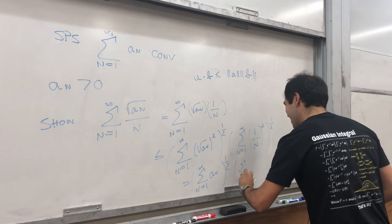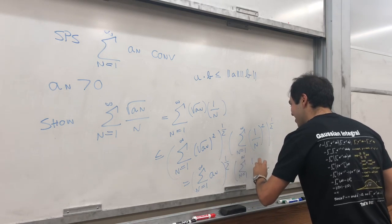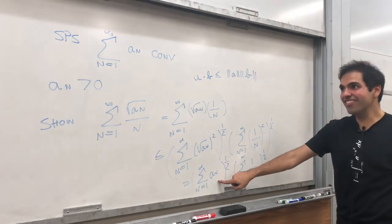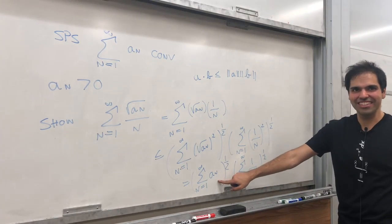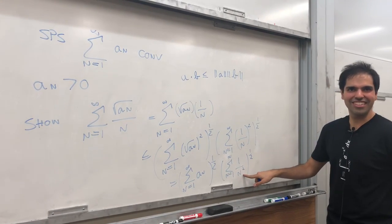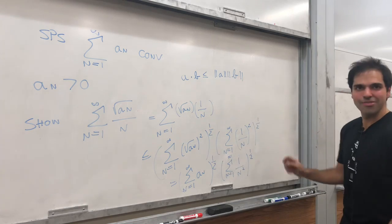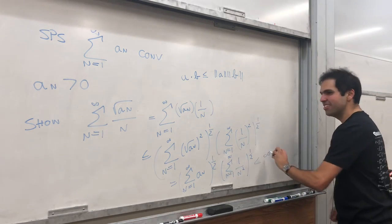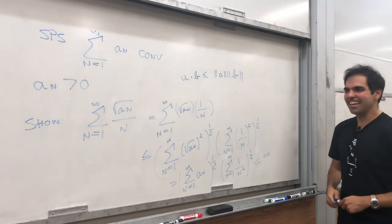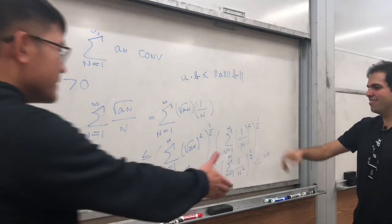So this is less or equal to the sum from 1 to infinity of square root of A_n squared, times sum from 1 to infinity of 1 over n squared, square root. And this becomes sum from 1 to infinity of A_n. And then that converges. 1 to infinity of 1 over n squared. So this converges by assumption. And this is a 2 series, which converges. So this times this, you're both less than infinity. So this whole thing converges.